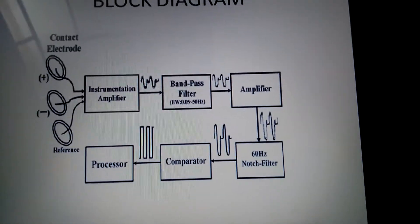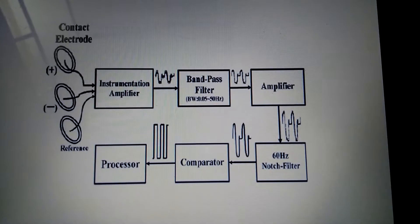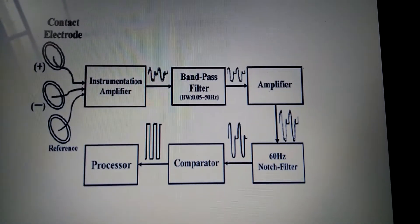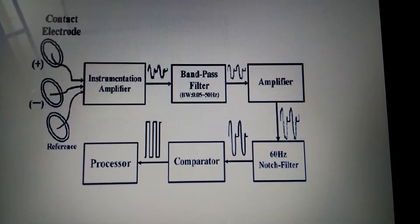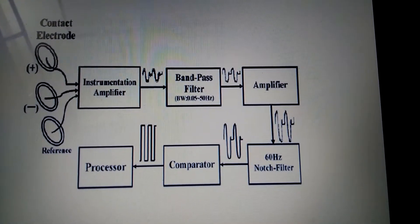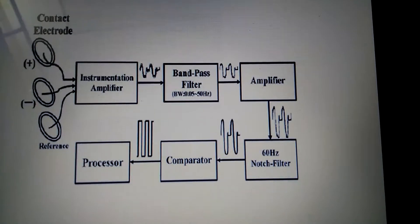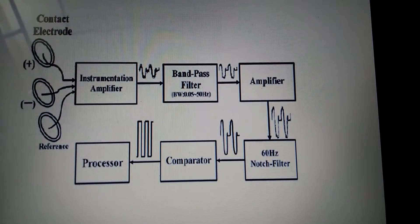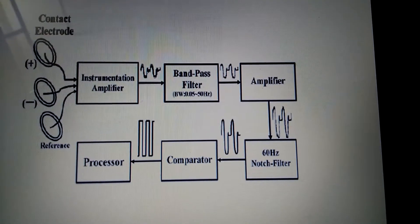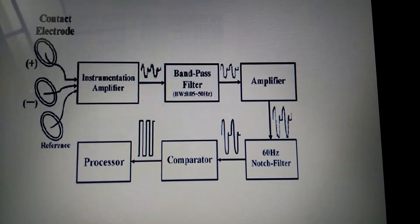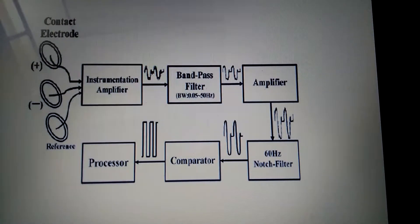This is the block diagram. The components are: electrodes, then amplifier, band pass filter, amplifier, notch filter, comparator, and processor.